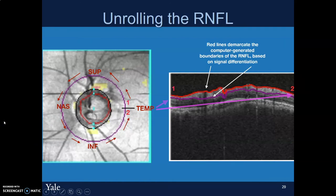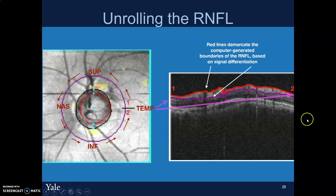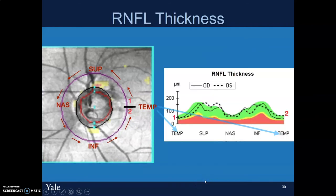The RNFL thickness map also plots and measures asymmetry between the right and left eye, coming up as the RNFL symmetry. Essentially what the machine is doing is looking at a circle and unrolling it into a linear picture for us to interpret. On typical OCT machines, it starts at the temporal edge and then goes around to the superior, nasal, inferior aspect and back to the temporal, and a similar breakdown is reflected in the RNFL thickness map.